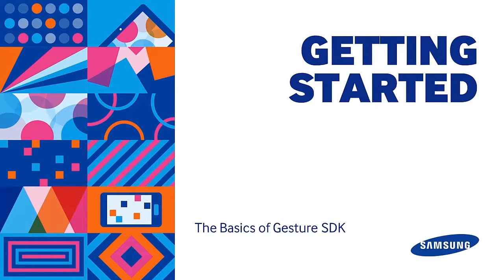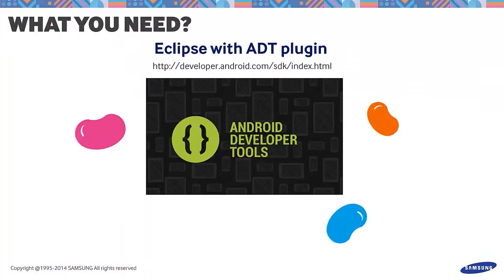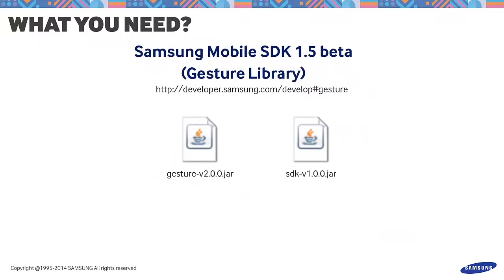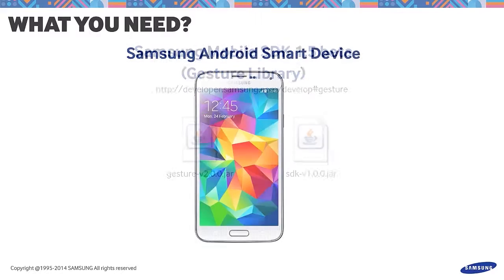To develop for the Gesture SDK, we will need the following: First, Eclipse with ADT plug-in. Jelly Bean or API level 18 is the minimum requirement to use the Gesture SDK. Second, we are required to have specific jar files, which can be found in the Mobile SDK 1.5 archive file.